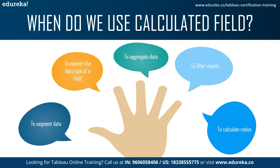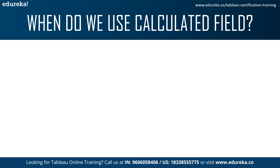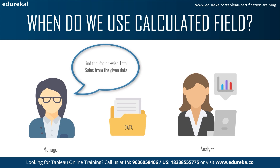Calculated fields can also help you aggregate data using aggregation formulas, exclude unnecessary data to conduct more thorough analysis, and save database processing and storage resources by calculating ratios across several different variables in Tableau. Let's go ahead and understand this with an example.